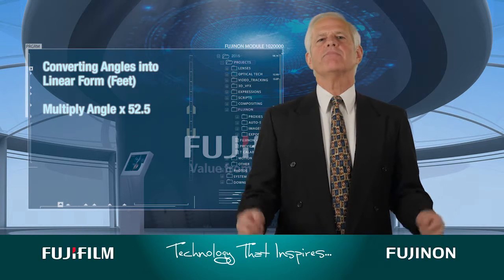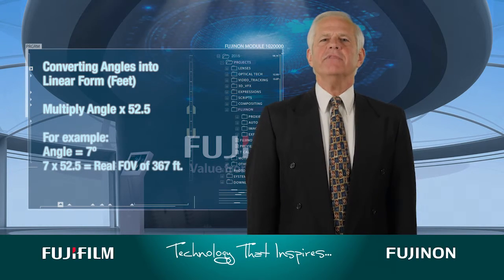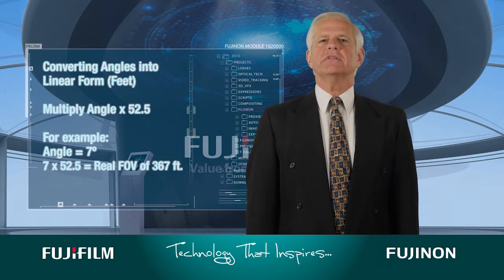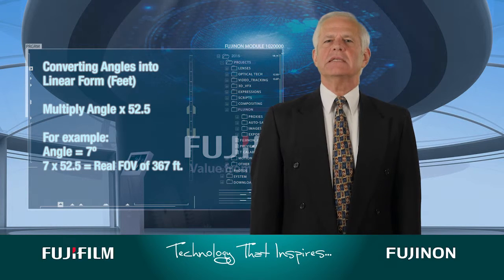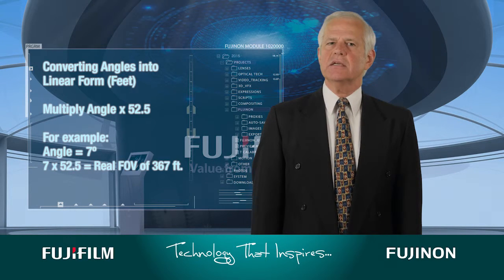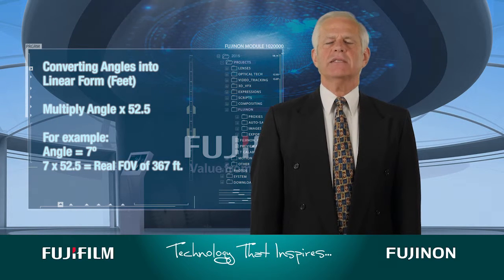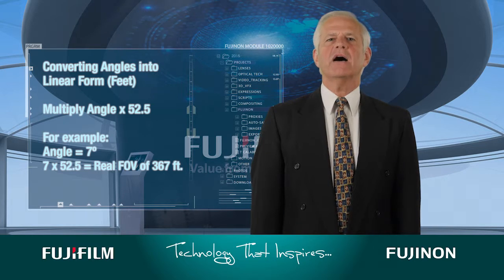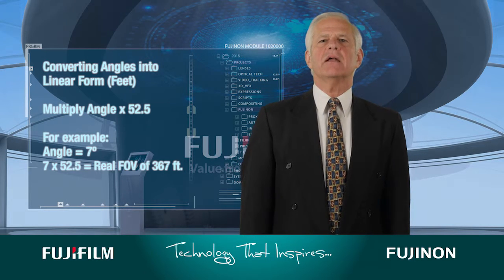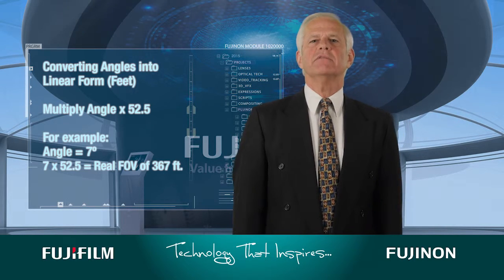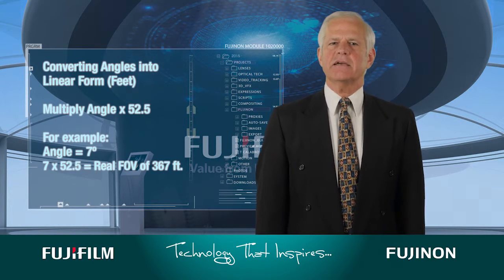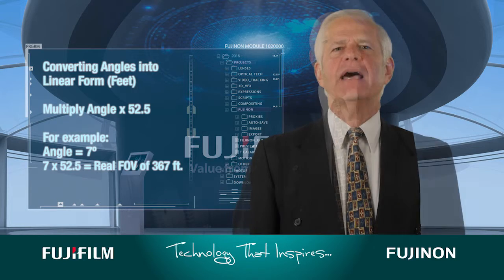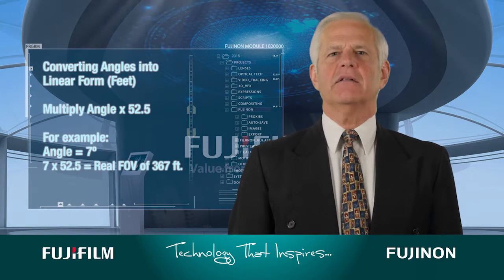So if the angle of a 7x magnification is 7 degrees, then you take 7 times 52.5 to get a real field of view of 367 feet.